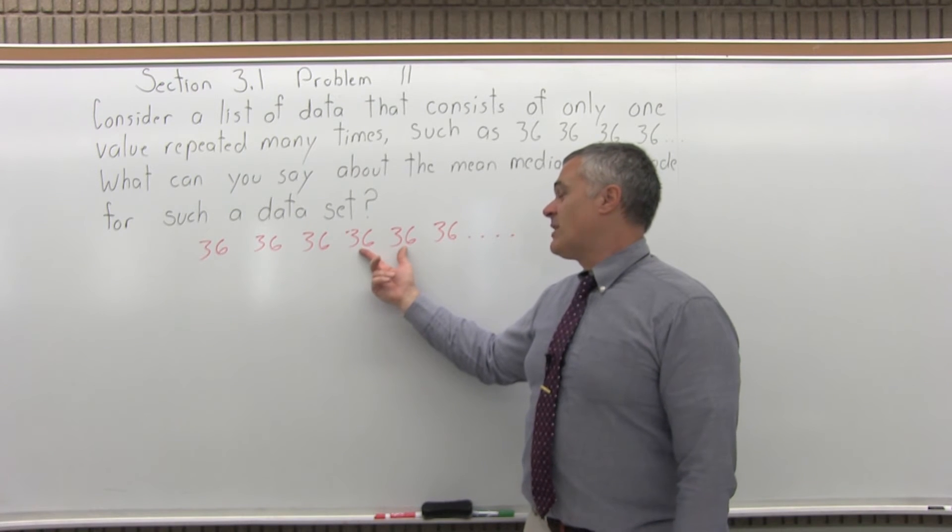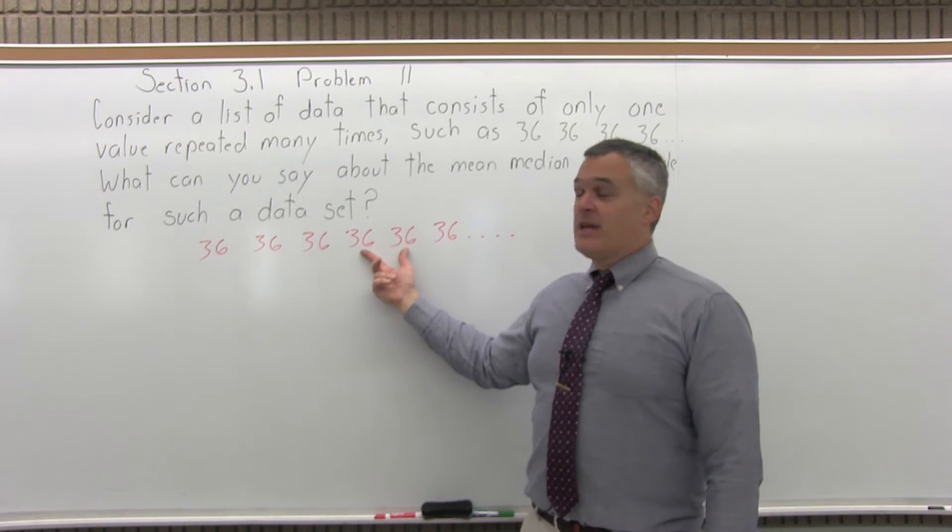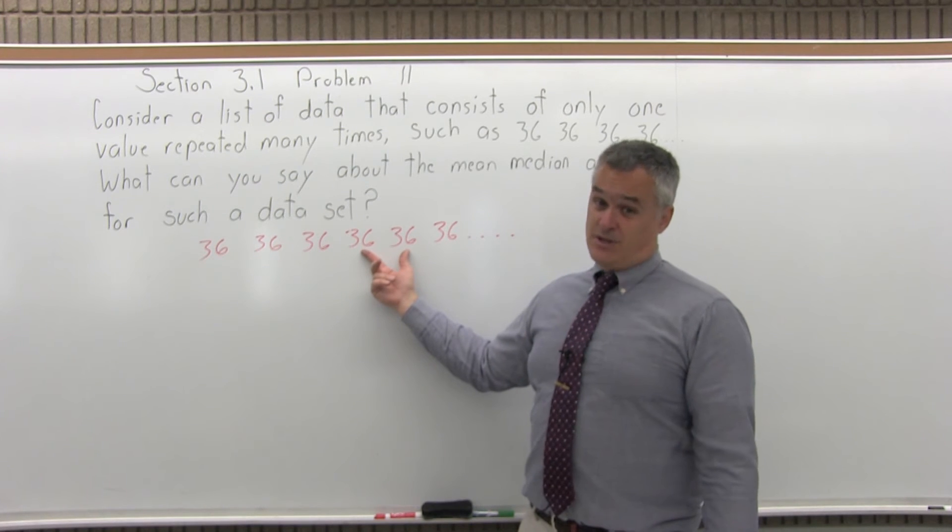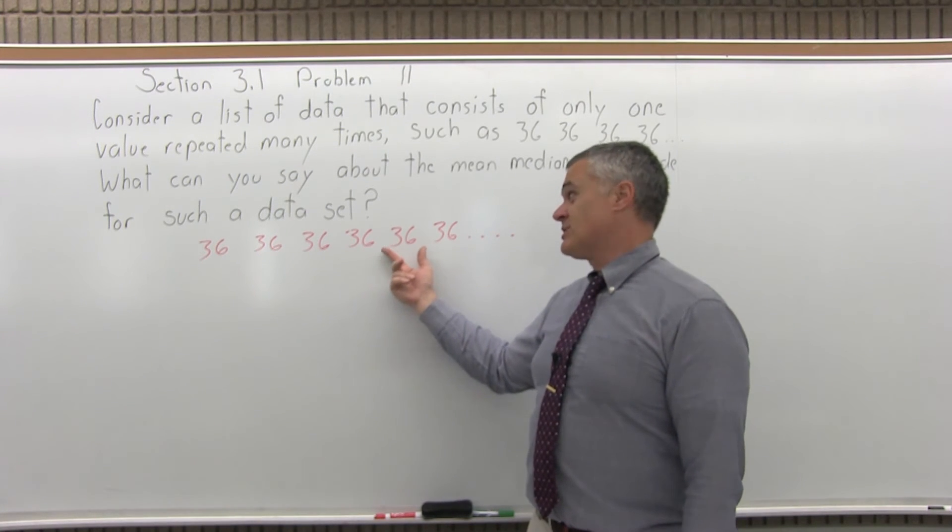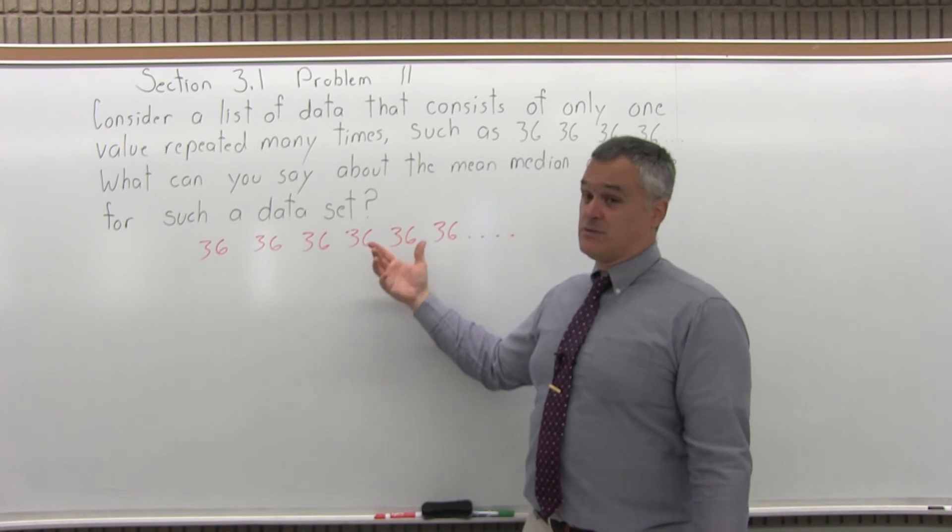If there's an even amount of data, then you take the average of the middle two 36s, which is still going to be 36, right? 36 plus 36 over 2, 72 over 2 is 36.